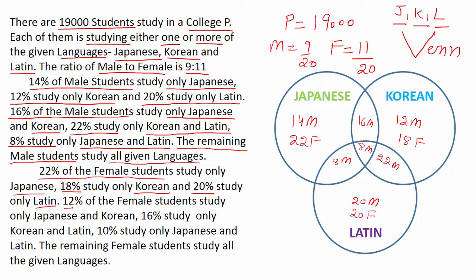Next point: 12% of female students study only Japanese and Korean, so we write 12F in only Japanese and Korean. 16% study only Korean and Latin, so we write 16F in only Korean and Latin. And 10% study only Japanese and Latin, so we write 10F in only Japanese and Latin.